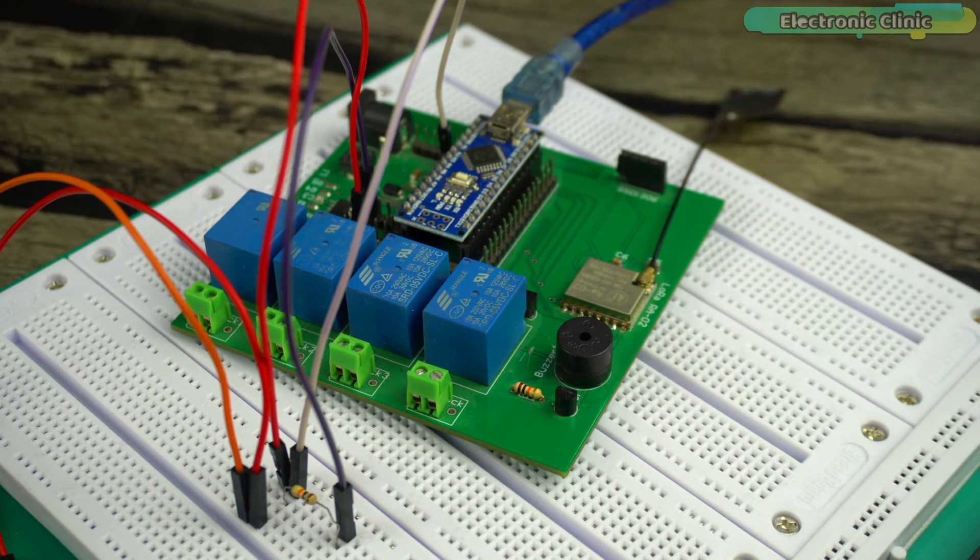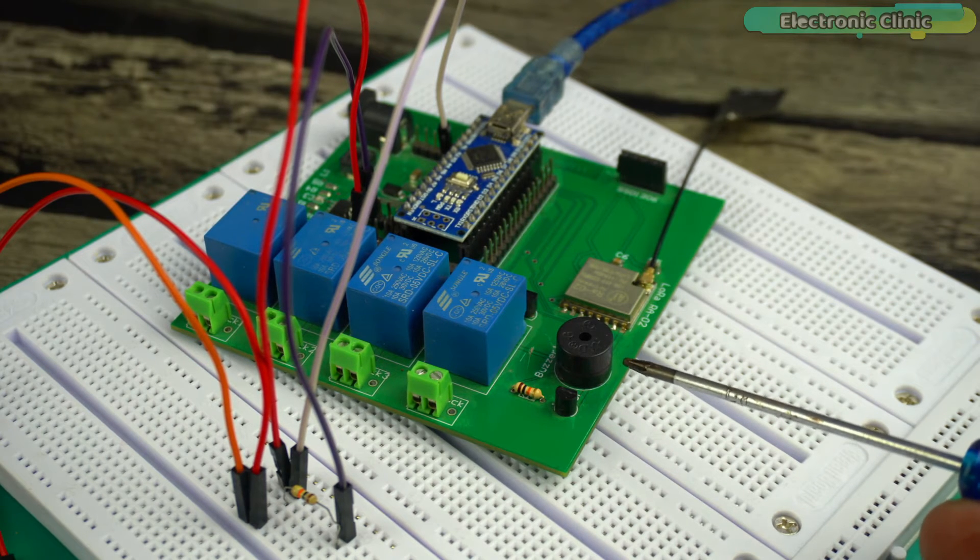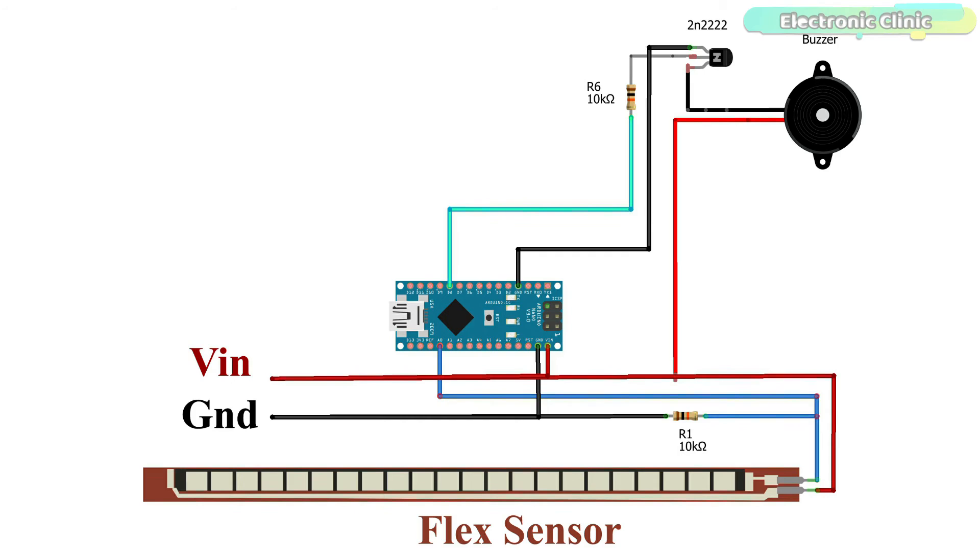This time round, I'm also going to use a 5V buzzer, and as you can see, my Arduino development board already has a buzzer, which is connected to the Arduino digital pin D8. For the connections, you can follow this circuit diagram. Now let's go ahead and take a look at the programming.